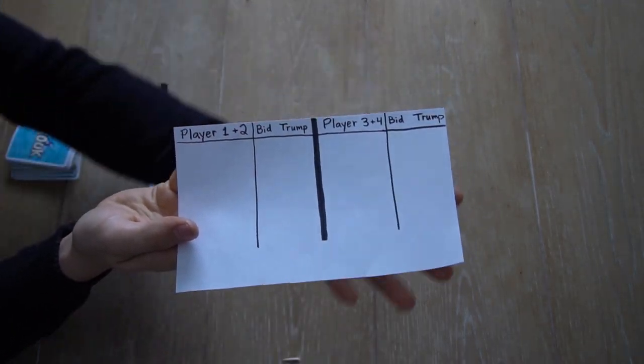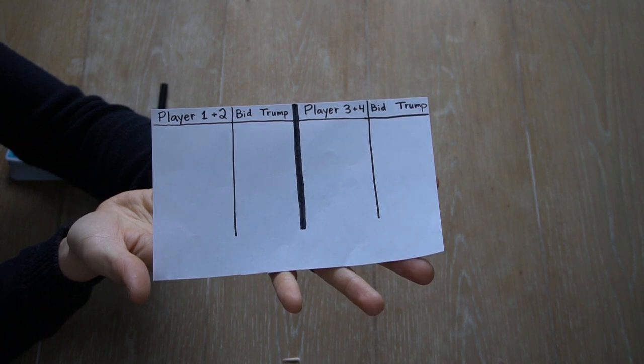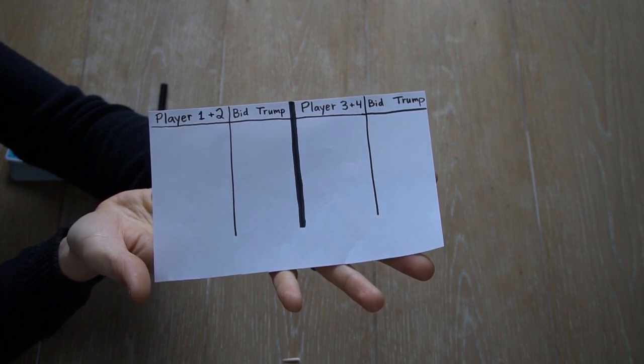In this example, we have player 1 and 2 versus player 3 and 4. And we left some room for recording bids and trumps.